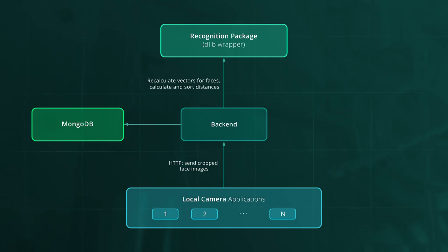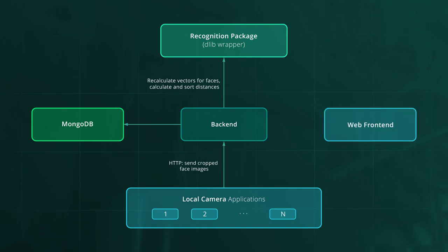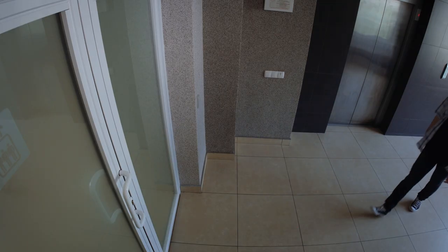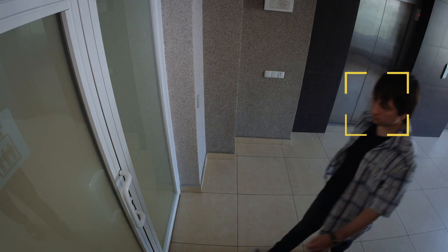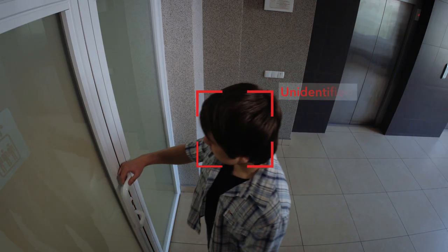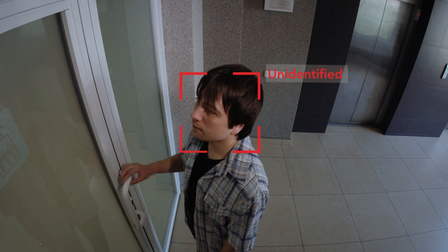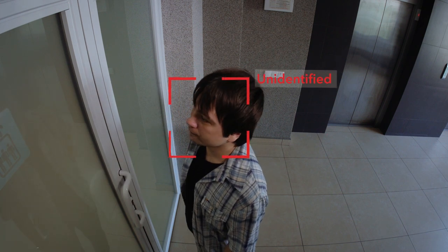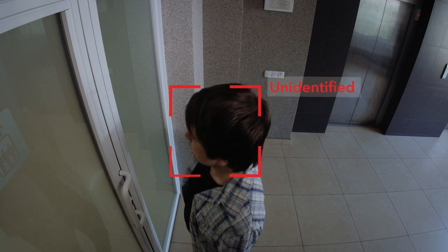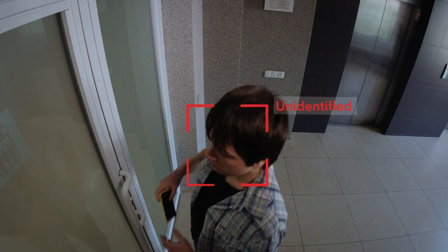Using a 128-dimensional vector of face features, whenever a vector is calculated, it's compared with the existing entries by calculating Euclidean distance to each feature vector of each person in the database. The backend API saves the images, and if the detected face is unidentified, it creates a new record in the detection log with a new person ID.